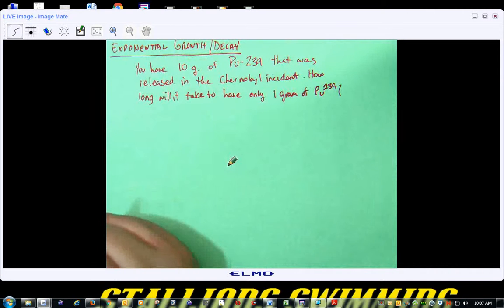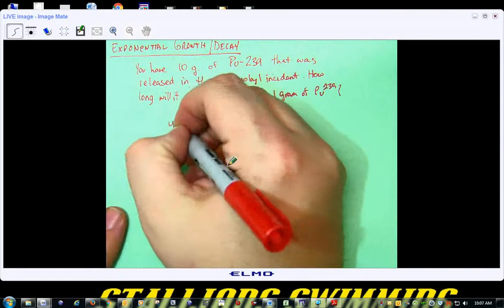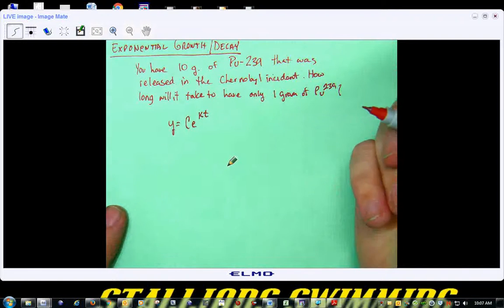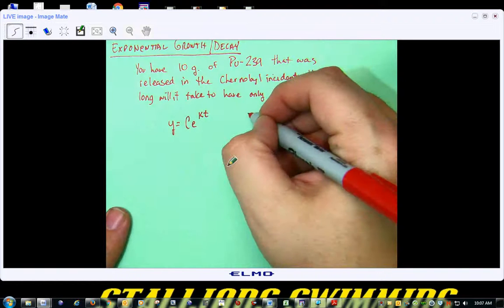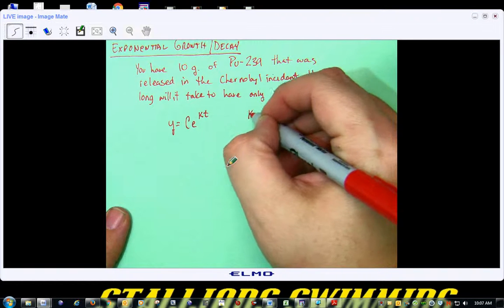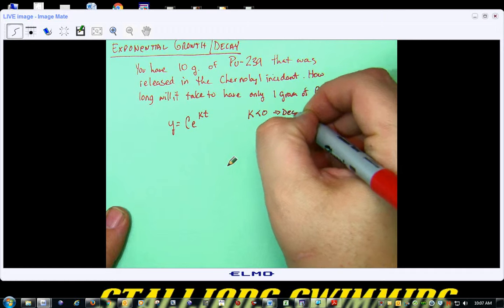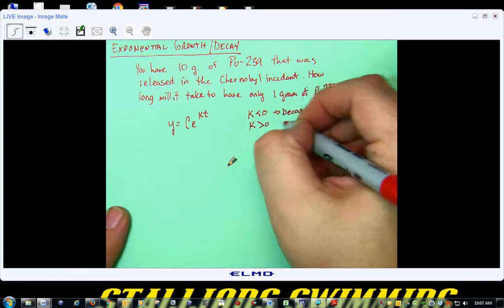Y is equal to CE to the KT power. This is your exponential growth and decay model. Now, the key is, if K is less than zero, it's decay. If K is greater than zero, it's growth.